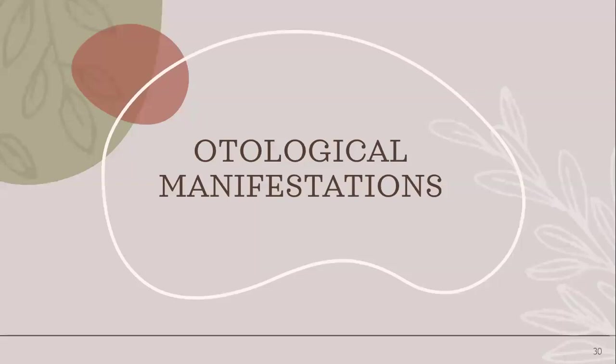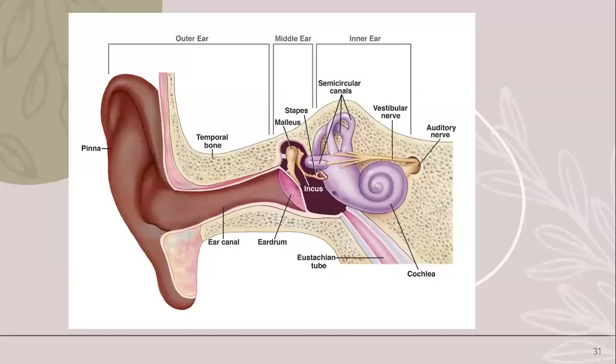Moving on to otological manifestations of HIV. The anatomy of the ear includes the outer ear, middle ear, and inner ear. The areas of discussion today include otitis externa, herpes zoster oticus, and otitis media.